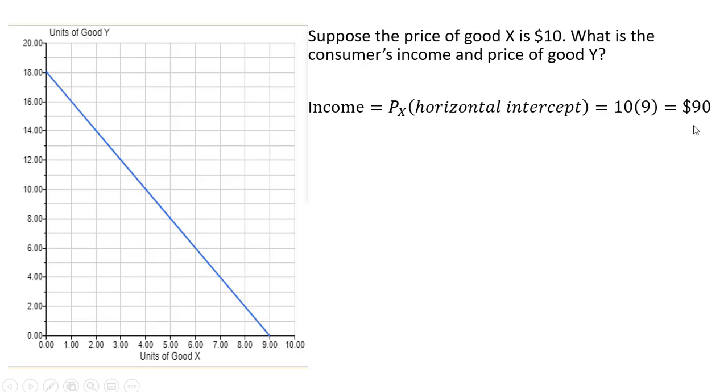If we take $90 and divide it by 10, that's the number of units this consumer can afford of good X. The price of good Y is the income, $90, divided by the vertical intercept. So the price of good Y is $5.